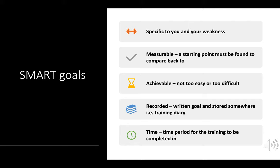Your goals need to be measurable — this means your goals need to give you a start point that you can compare back to in future to see if you have met that goal. Your goals need to be achievable, meaning they should not be too easy or too difficult — they need to be realistic to your level of performance. Your goals need to be recorded, which is important to make the performer accountable; they need to be written down or stored somewhere, such as a training diary or by a coach. Finally, your goals need to have a time period — you need to create a timeframe to complete your goals within, whether that's a year, eight weeks, or a season.